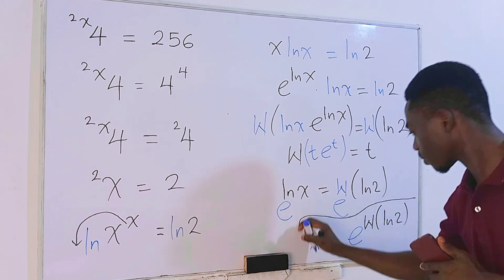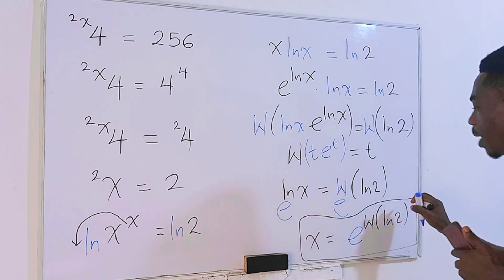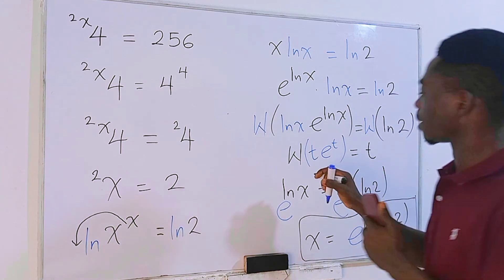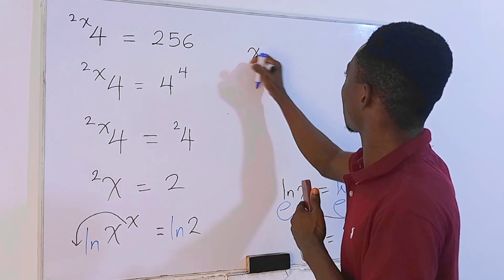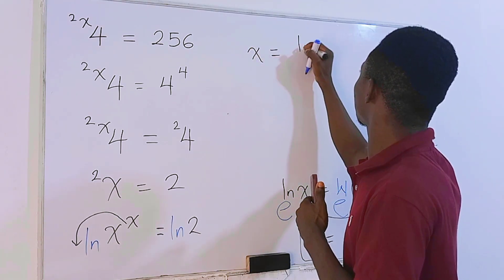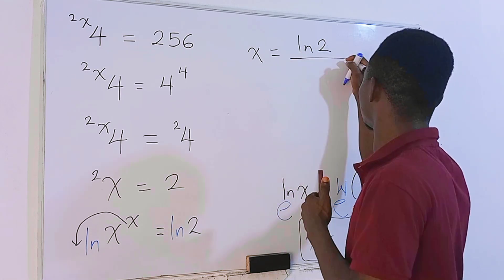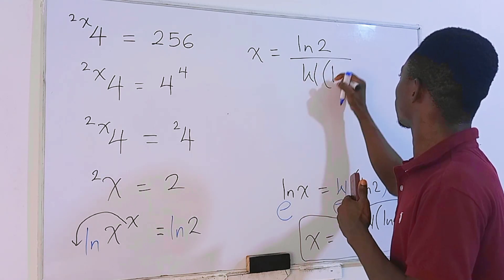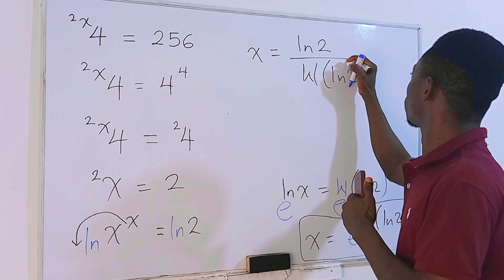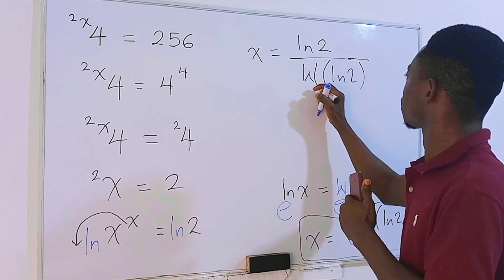Of course, this is our answer to the problem. But one way to write this is x equals natural log of 2 divided by Lambert W function of ln of 2.